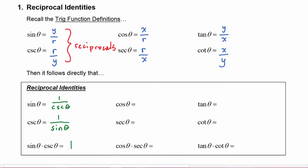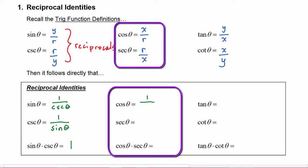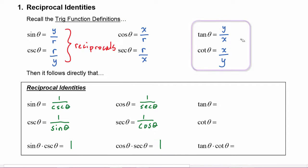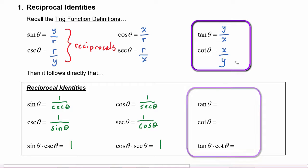The same relationship occurs between cosine and secant — we can see that they're reciprocals, so cosine of theta is going to be one over the secant of theta, and secant of theta is one over the cosine of theta. And finally, the same thing is true for tangent and cotangent — these fractions are just reciprocals of each other, so tangent of theta is one over the cotangent of theta, and cotangent of theta is one divided by the tangent of theta.